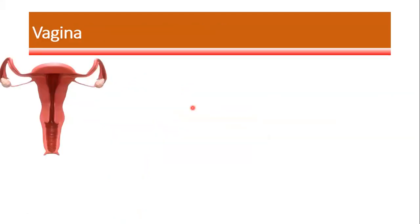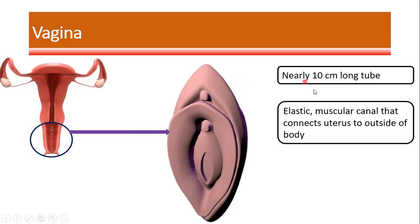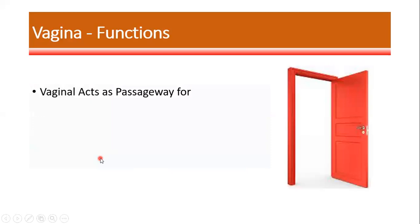Vagina. The vagina is about nearly 10 centimeters long tube. It is elastic and muscular in nature, connecting the uterus to the outside world. The vagina has an opening, and this opening of the vagina is known as the vaginal opening or vaginal orifice. This opening is generally covered with a membrane called the hymen.